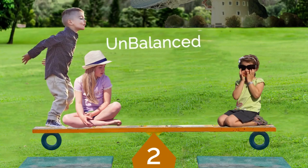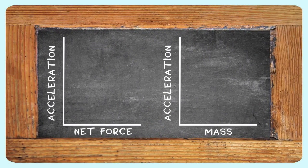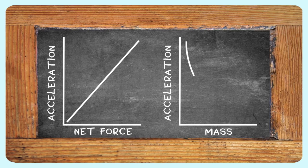His Second Law tells us how objects behave when the forces aren't balanced. The acceleration of an object is directly proportional to the net force and inversely proportional to its mass.